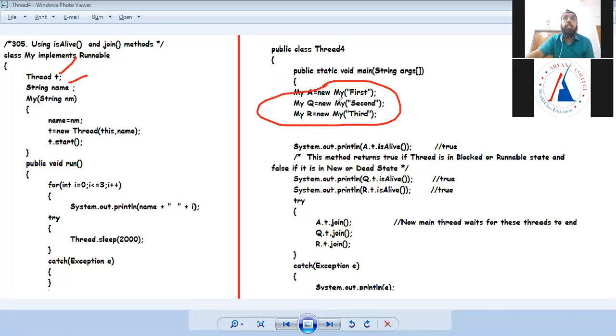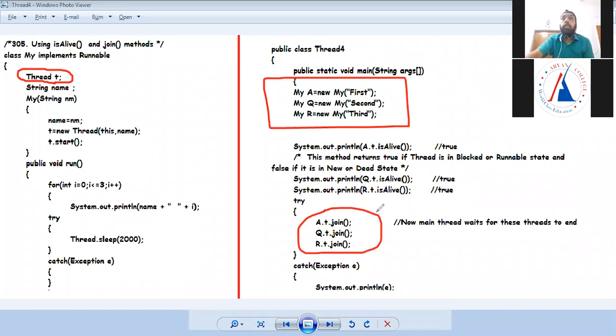So here, A, Q and R are three threads, three names, there is no relation between three names. It's just so much that these are created within the main. So, I'm joining these three threads in the main, so until the main will not go ahead, until these three threads will not end.